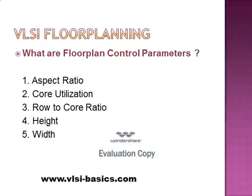Core utilization indicates the amount of core area used for cell placement. It is calculated as the ratio of total cell area to the core area. A core utilization of 0.8 means 80% of the core area is used for cell placement and 20% is available for routing. Row-to-core ratio is the amount of channel space provided for routing between cell rows. A value of 1 leaves no routing channel space between the cell rows.